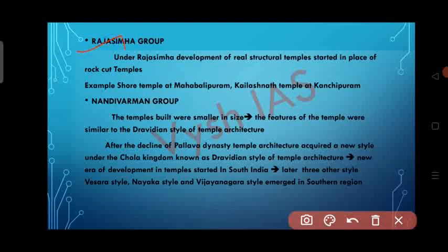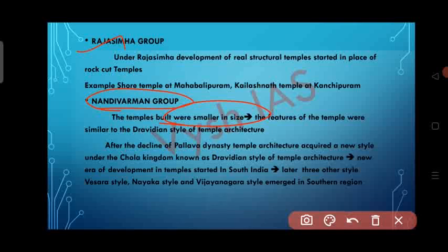Under the Rajasimha group, the development of real structural temples started in place of rock-cut temples. Examples include the Shore Temple at Mahabalipuram and Kailashanatha Temple at Kanchipuram. In the Nandi Varma group, the temples built were very small in size, and their features were similar to the Dravidian style of temple architecture.